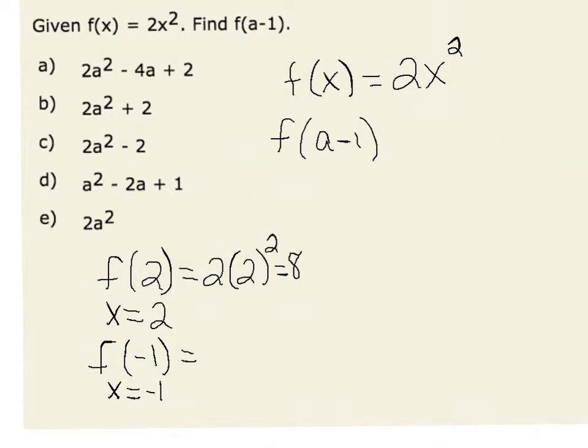In our case, this would be 2 times a negative 1 squared. Negative 1 squared is a positive 1. So f of negative 1 would be equal to 2.